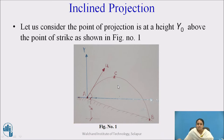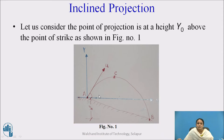Here you can observe this figure. The projection of the particle is inclined with the initial velocity u. After reaching a certain point, the velocity of the particle will be 0, and again it will come downward to the earth due to gravitational force. This case is observed in sloping grounds.